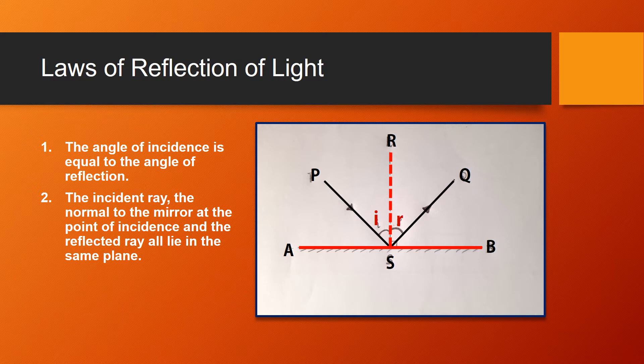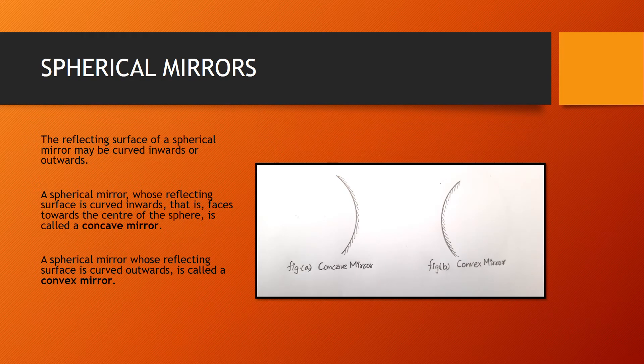The angle of incidence I is equal to the angle of reflection R. The second point states that the incident ray, the normal to the mirror at the point of incidence, and the reflected ray all lie in the same plane. These two points together make up the law of reflection of light.